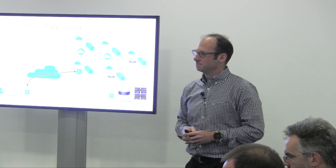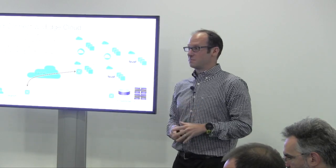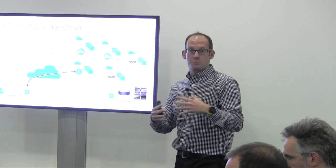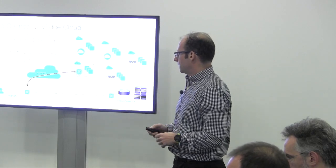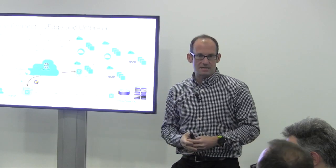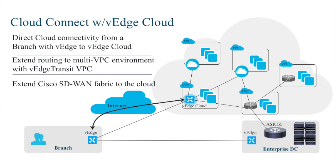Beyond SD-WAN, there's also integration with our Umbrella service. If I have direct internet access at the branch, I need security to protect the users. The vEdge at the branch can redirect requests to Umbrella — all the URL filtering and related capabilities — and then forward on to the website. So in addition to extending SD-WAN to the cloud, we can now have a linkage to the Umbrella service enabling direct internet access with protection.